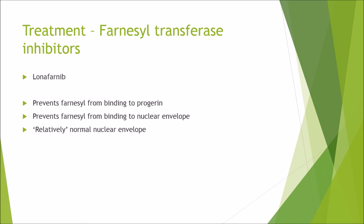To treat progeria we can use farnesyl transferase inhibitors, one in particular called lonafarnib. This prevents farnesyl from binding to progerin, which also prevents farnesyl from binding to the nuclear envelope, and as a result you get a relatively normal nuclear envelope.